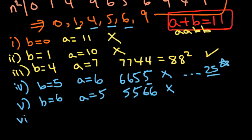And the last case we have is when B equals 9, then A equals 2. Then we have 2299. And again, this is not a perfect square.